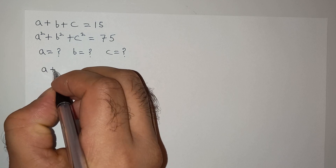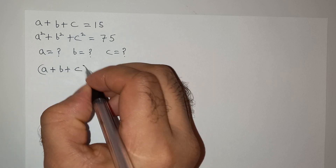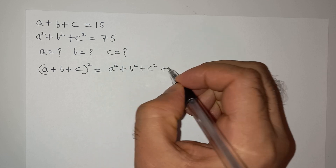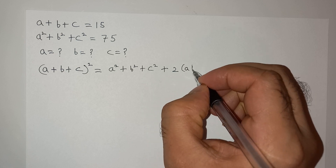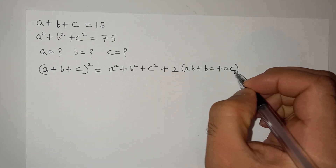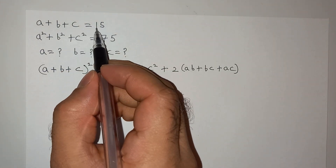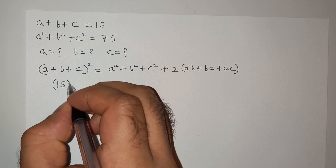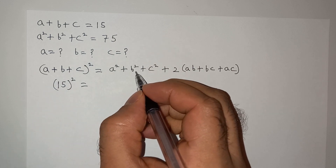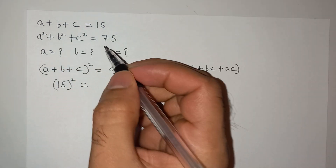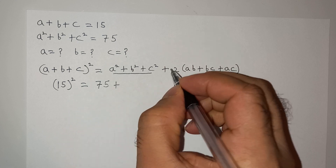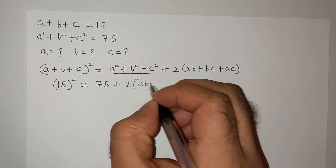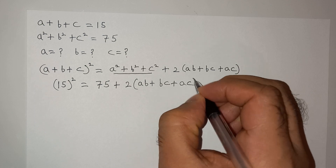I'll use this formula: a plus b plus c, whole squared, equals a squared plus b squared plus c squared plus 2 times bracket ab plus bc plus ac.